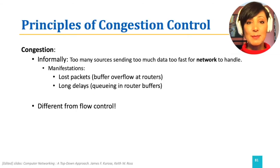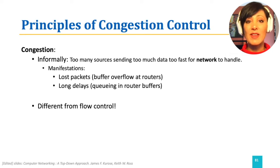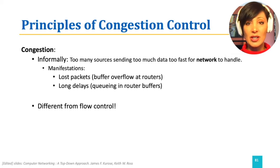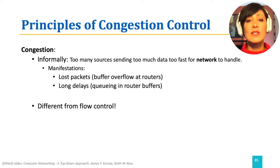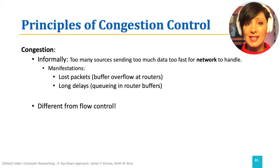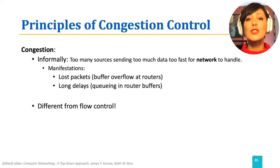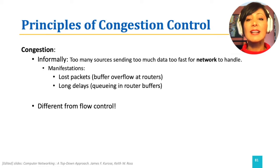Congestion is experienced by a packet in a network when routers used along the path to the destination have more traffic than they can handle. Therefore, their buffers grow longer due to high traffic intensity and eventually overflow. As a result, we experience packet delays and losses. You can think of congestion as something that happens when too many sources send too much data too fast for the network to handle, and therefore they clog the network.